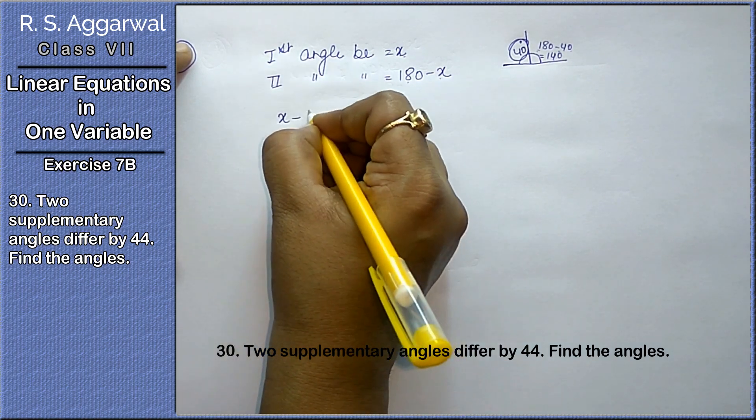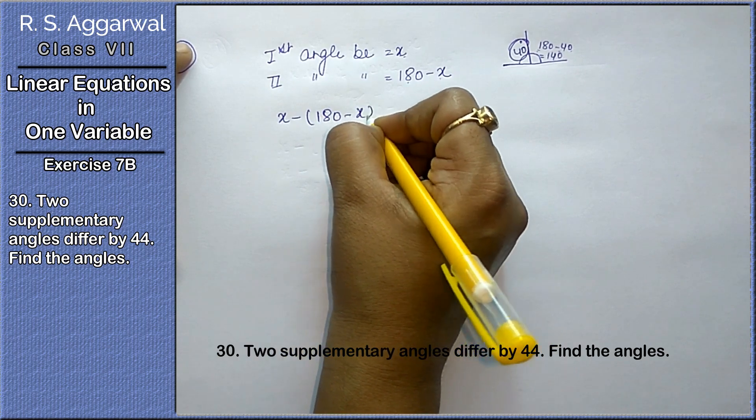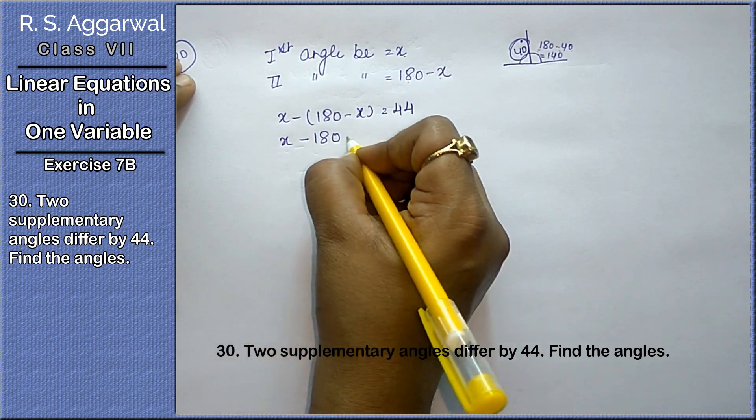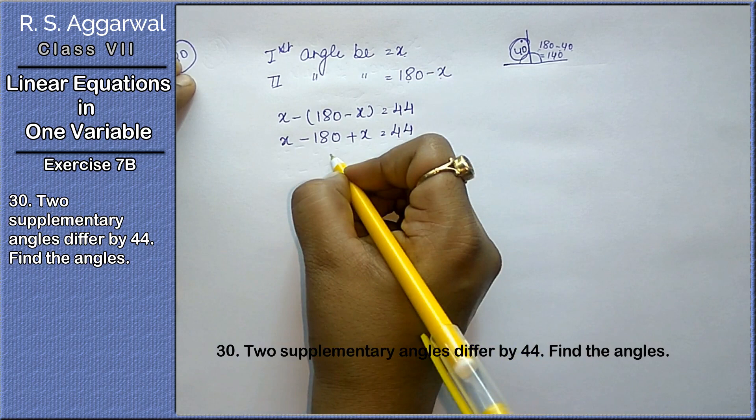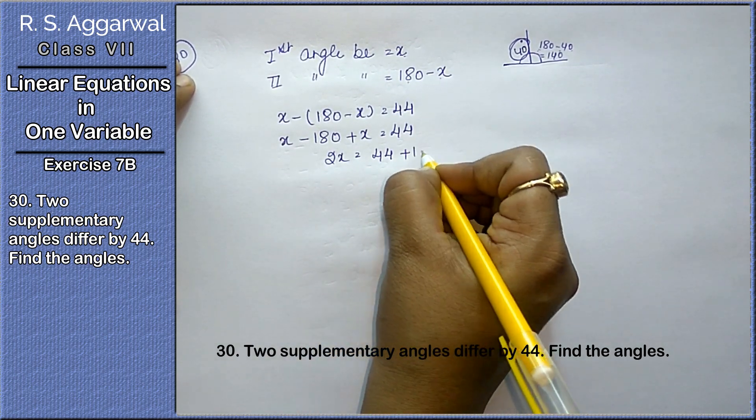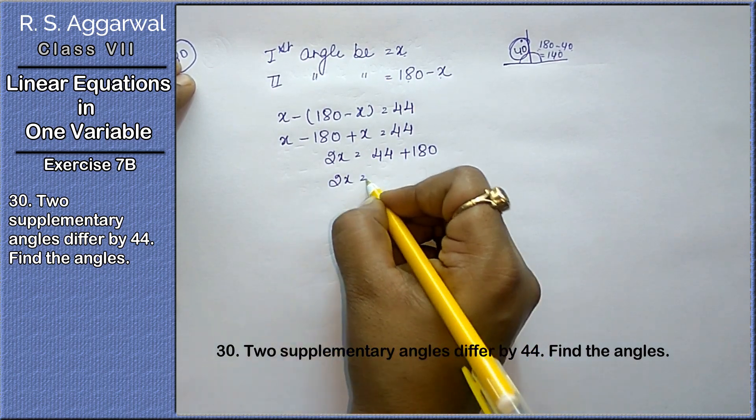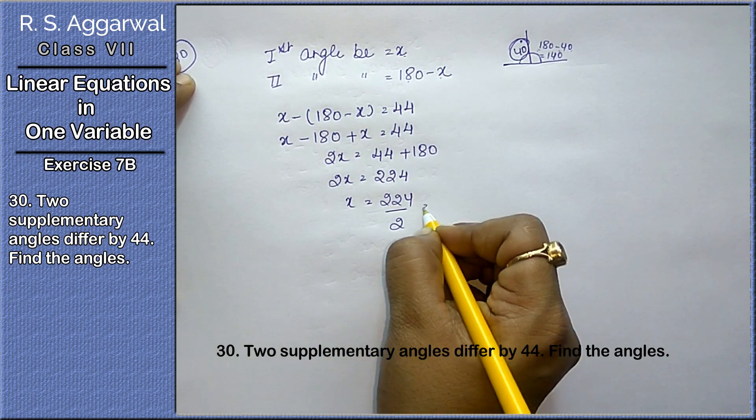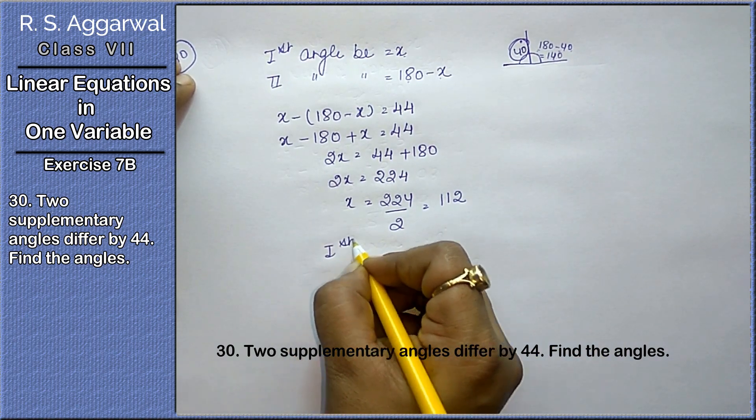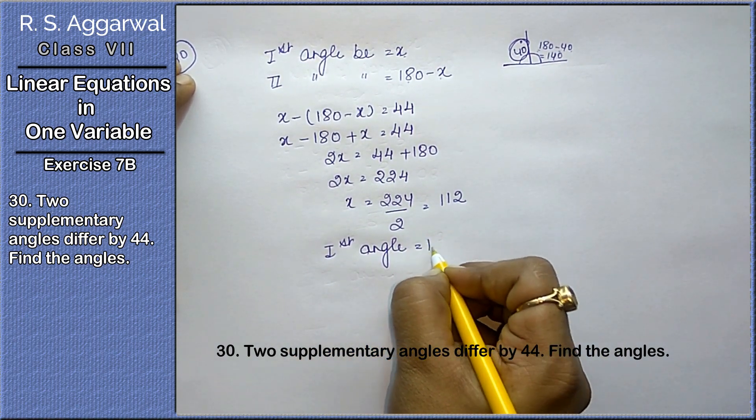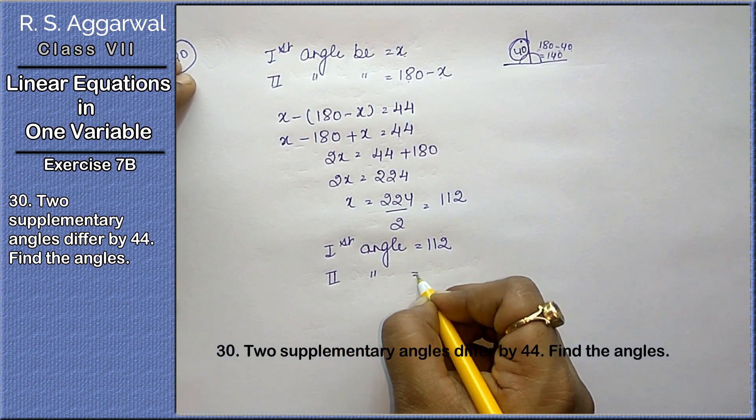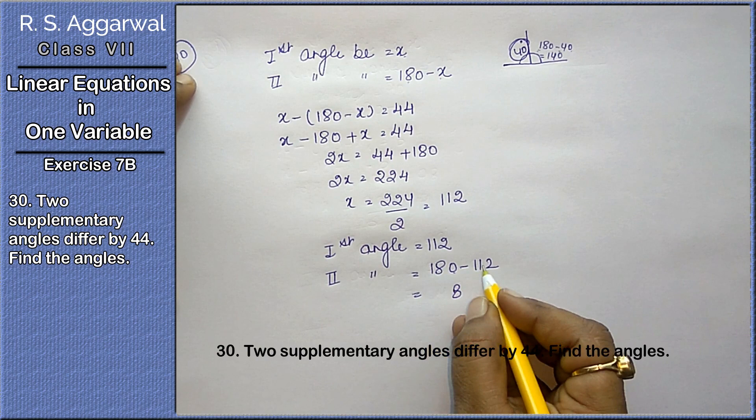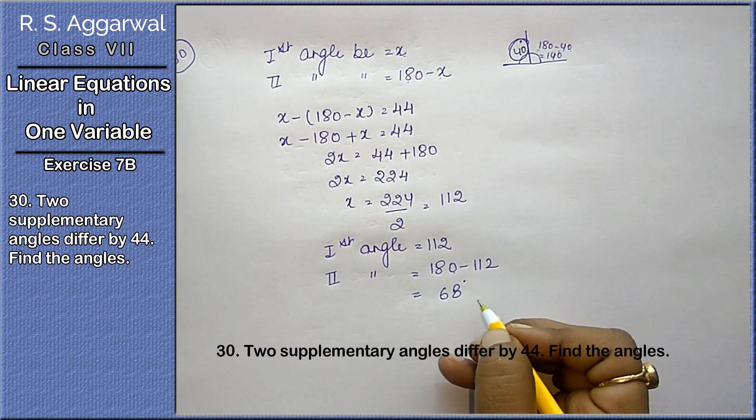They are saying two supplementary differ by 44. x minus 180 minus x equals to 44. Differ means minus. Now we will open the bracket, minus 180 plus x equals to 44. 2x equals to 44 plus 180, 2x equals to 224, x equals to 224 divided by 2, that is 112. First angle is 112, second angle is 180 minus 112, the answer will be 68 degrees.